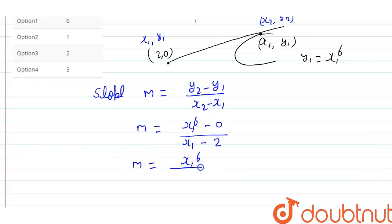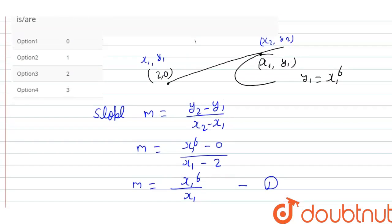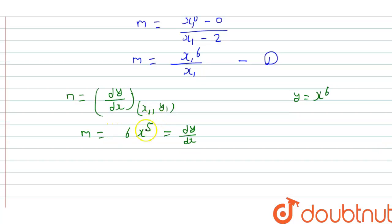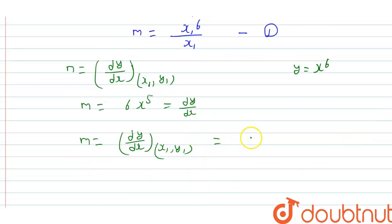We can also find slope m = dy/dx at point (x1, y1). Since y = x⁶, dy/dx = 6x⁵. So at point (x1, y1), m = 6x1 to the power 5. This is equation 2.